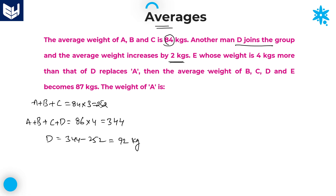The value of D is 92 kgs. Next, E whose weight is 4 kgs more than that of D replaces A. The weight of D is 92 and E is equal to 96 kgs.